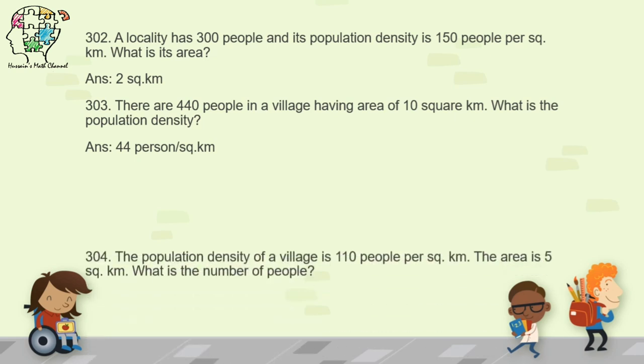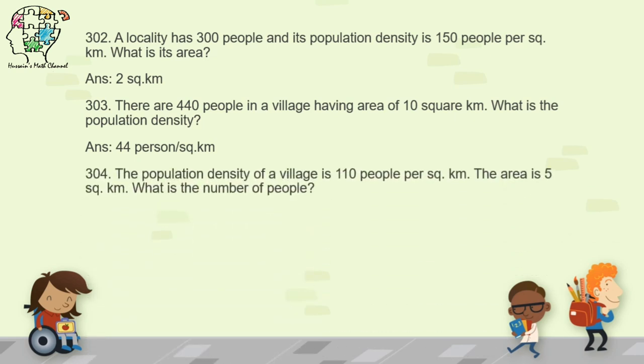Question 304: the population density of a village is 110 people per square kilometer and the area is 5 square kilometers — what is the number of people? Multiply population density by area: 110 times 5 equals 550 people.